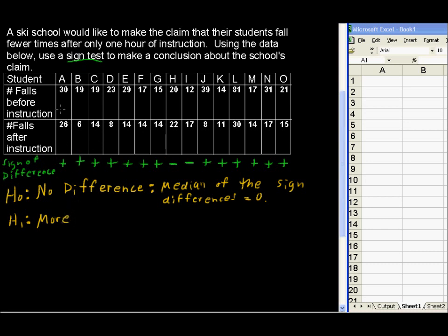More falls before instruction, that would mean it is effective. And so the median of the sign differences is greater than zero.